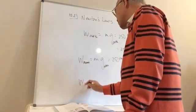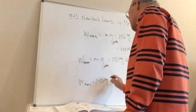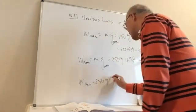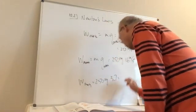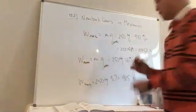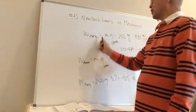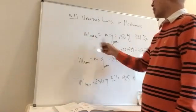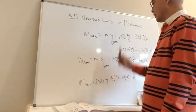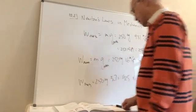And then Mars is the same thing, 250 kilograms times the G of Mars, which is 3.7, 925 newtons. Interesting to see that earth has the largest gravitational force, right? It has 9.81. This one was 1.6. This one was 3.7.